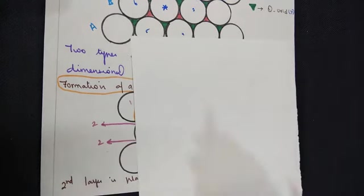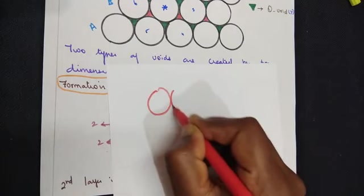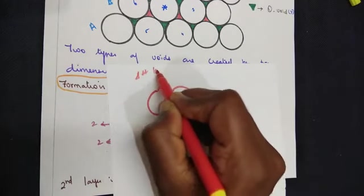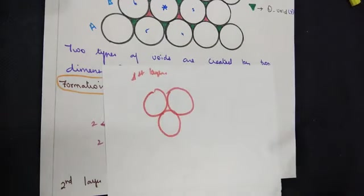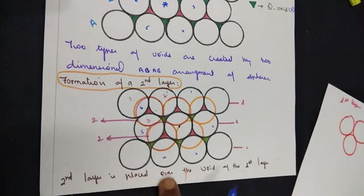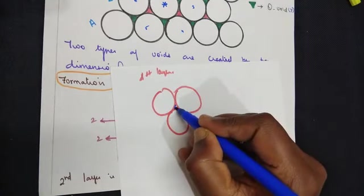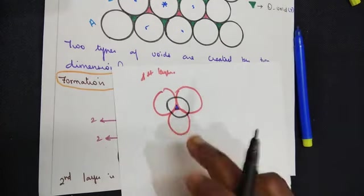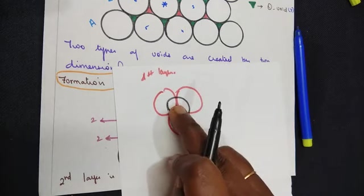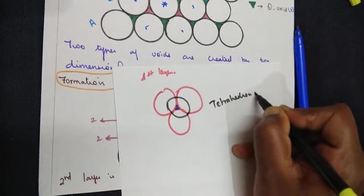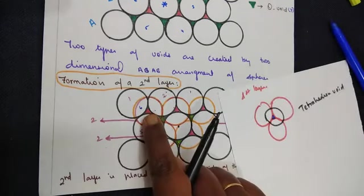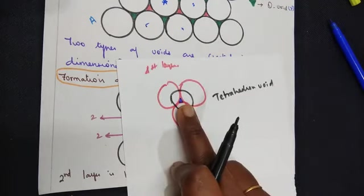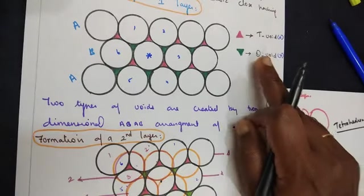Let's draw it separately. This is the first layer, shown with red color spheres. In the ABAB arrangement, there is one atom between two positions. The second layer is placed over the void of the first layer. The void created by the first layer is covered by the second layer. This type of void which is completely covered by the second layer is called a tetrahedral void. So when the void created by the first layer is fully covered by the second layer, it is called a tetrahedral void.